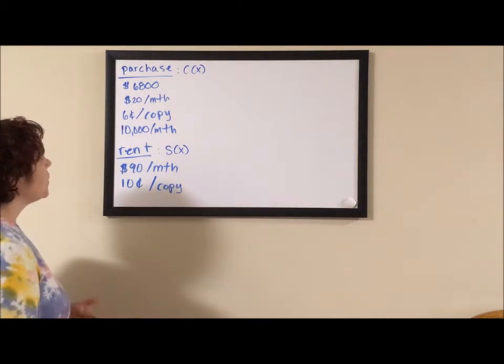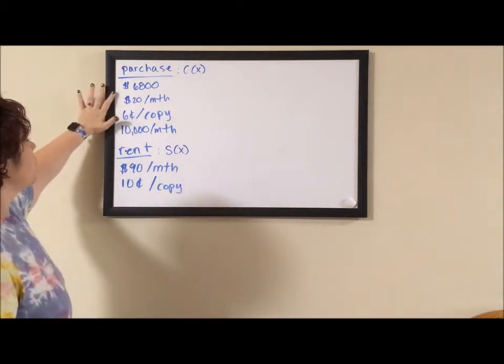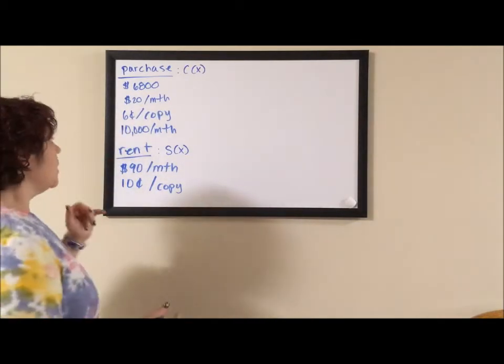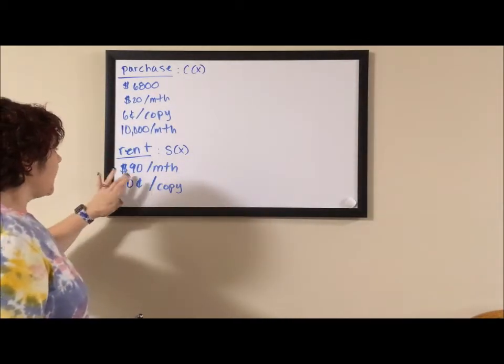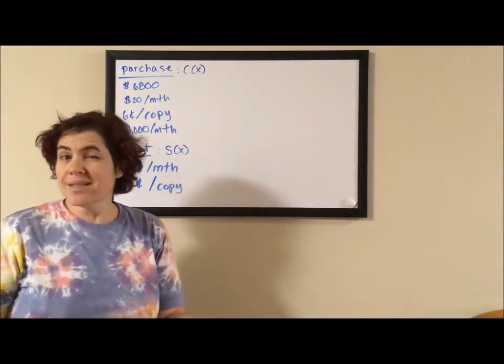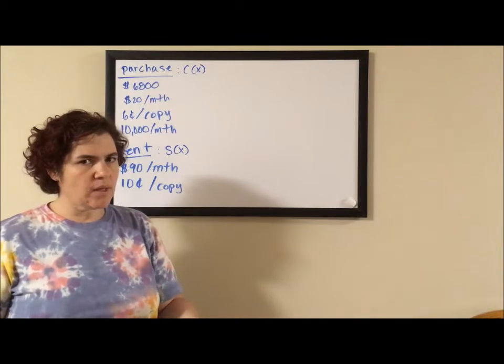It talks about a photocopier. It costs $6,800 to purchase, $20 per month for service, $0.06 per copy, and about 10,000 copies a month. We could rent. That's just $90 a month plus the per copy, which is $0.10 per copy. Still it's that same 10,000.